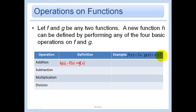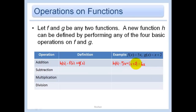Using our example functions, h of x would just be f of x plus g of x, and I would add them up like normal. 5x plus x is 6x, and then I have plus 2.